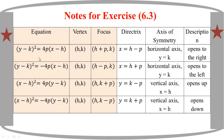This means x squared equals 4ph. The standard parabola equation is x squared equals 4ph.